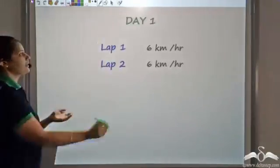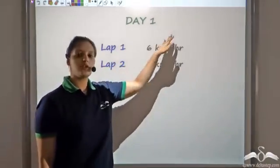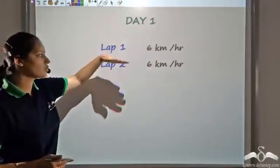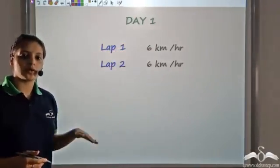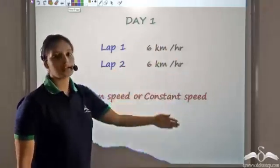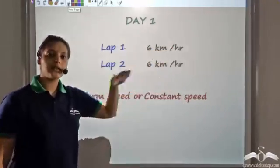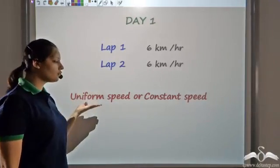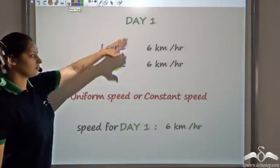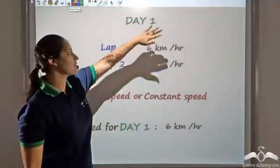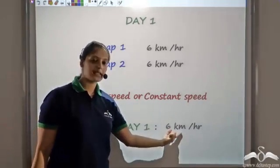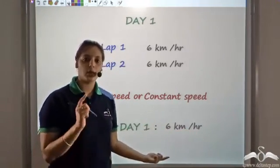So what we have observed is that on Day 1, the first lap was at a speed of 6 km per hour, and the second lap too was at the same speed — 6 km per hour. The speed is not changing; it is constant. We can say that he ran with uniform speed or constant speed, meaning there is no increase or decrease in speed. Both laps were at the same speed, so the speed for Day 1 was 6 km per hour — which is what his dad had observed: 6 km covered from 7 to 8 in 1 hour.